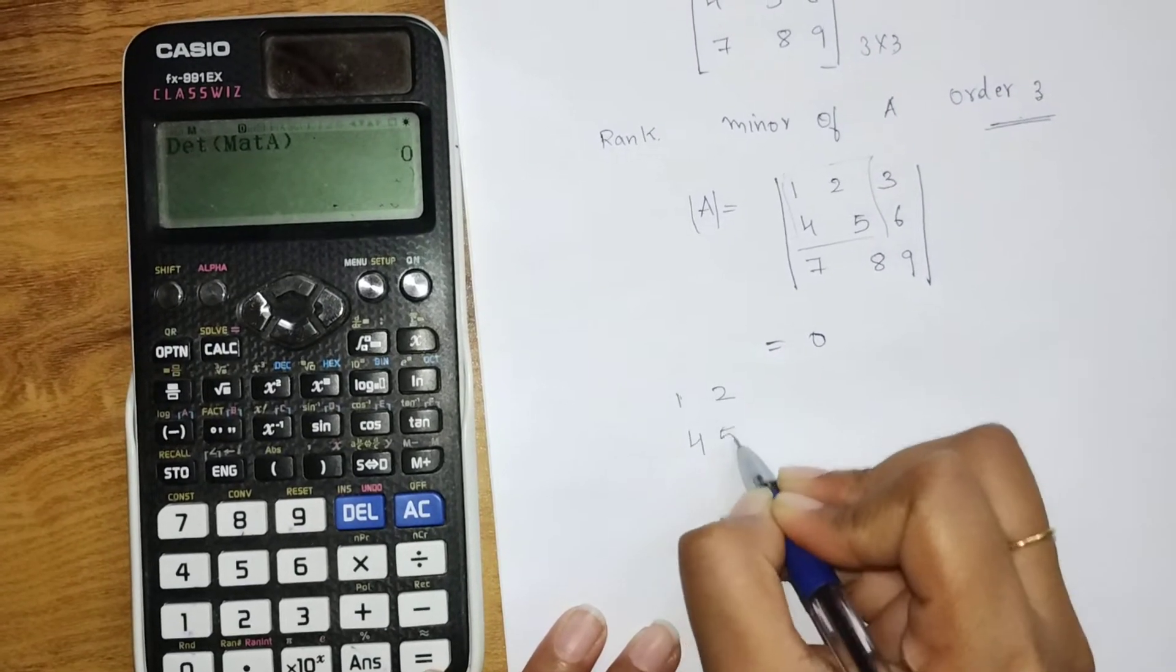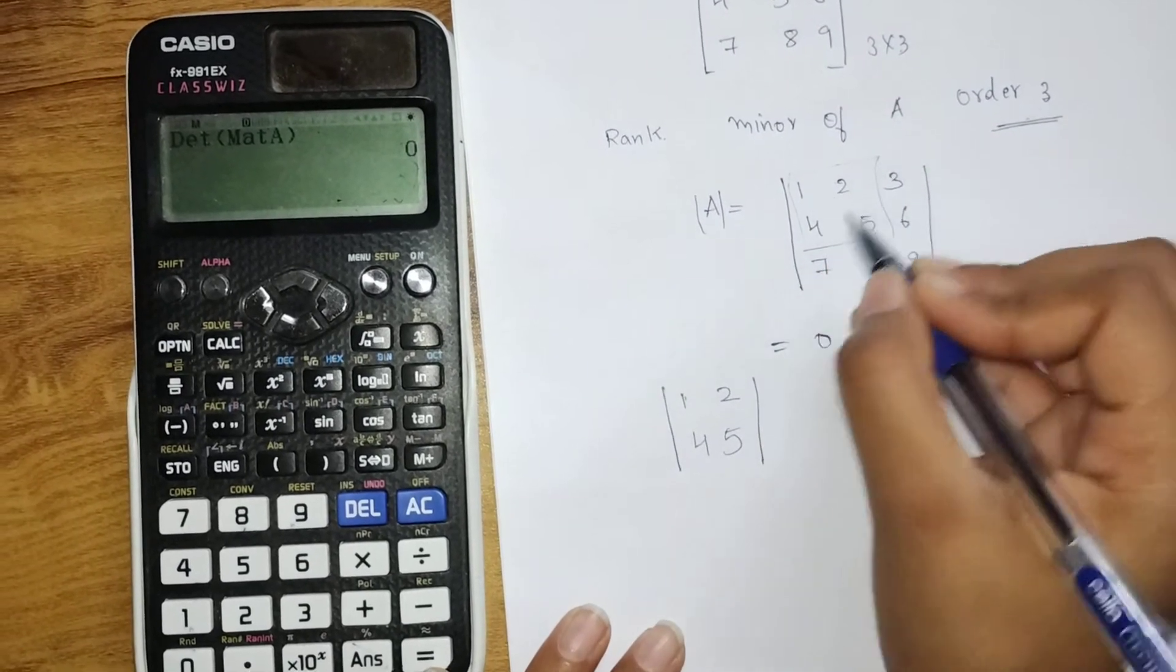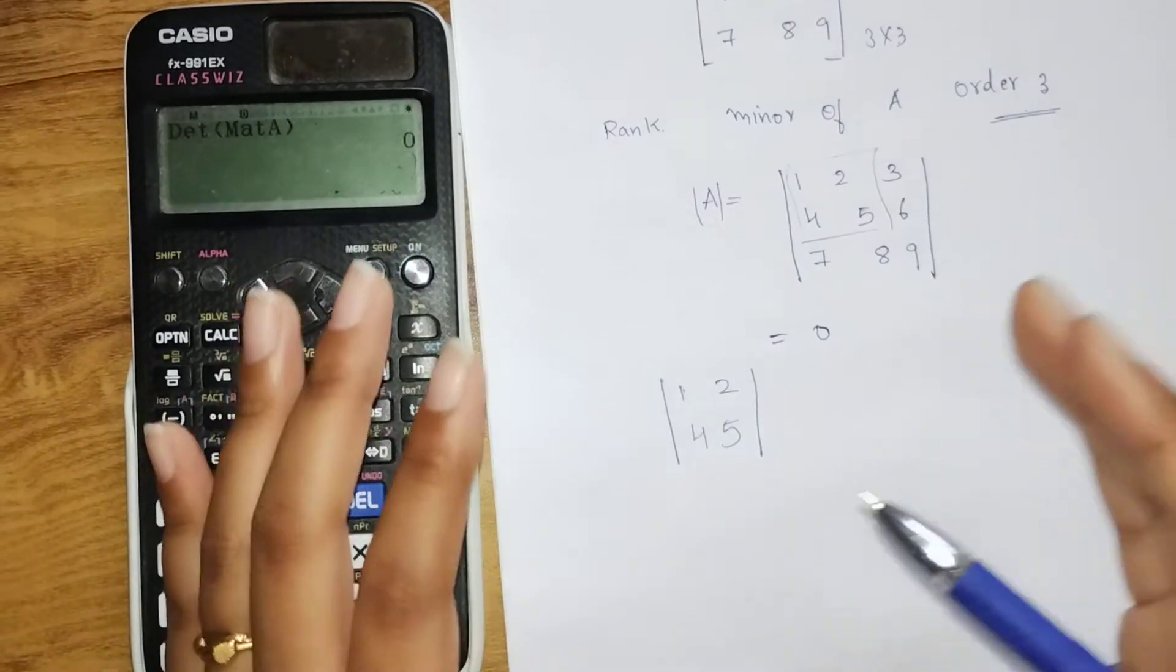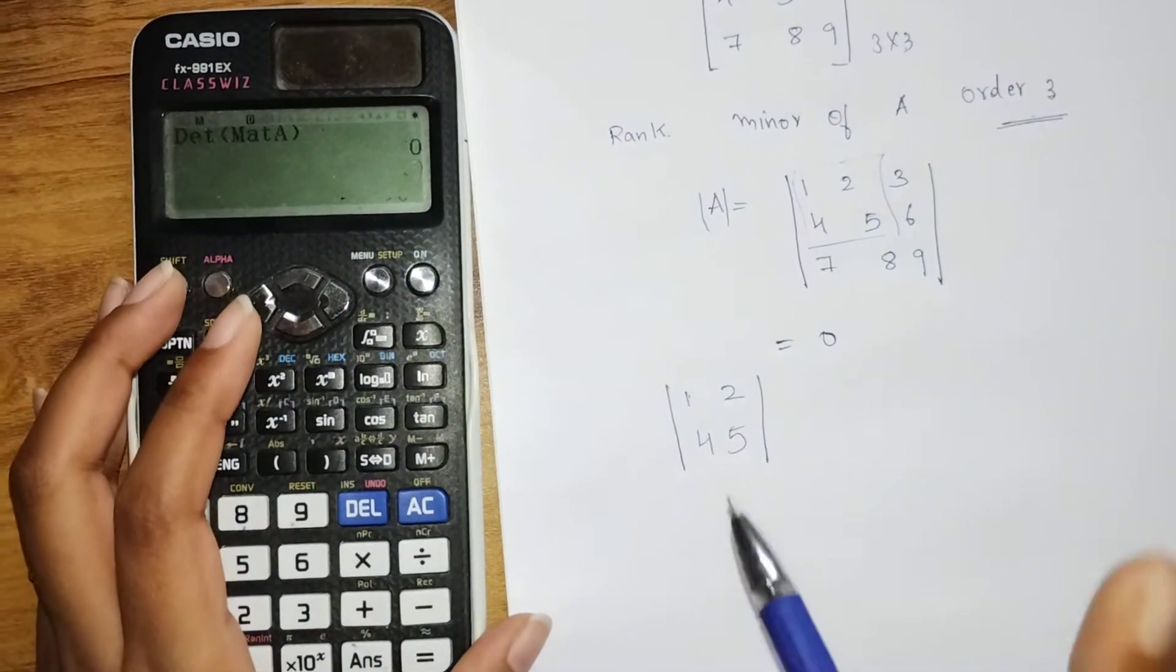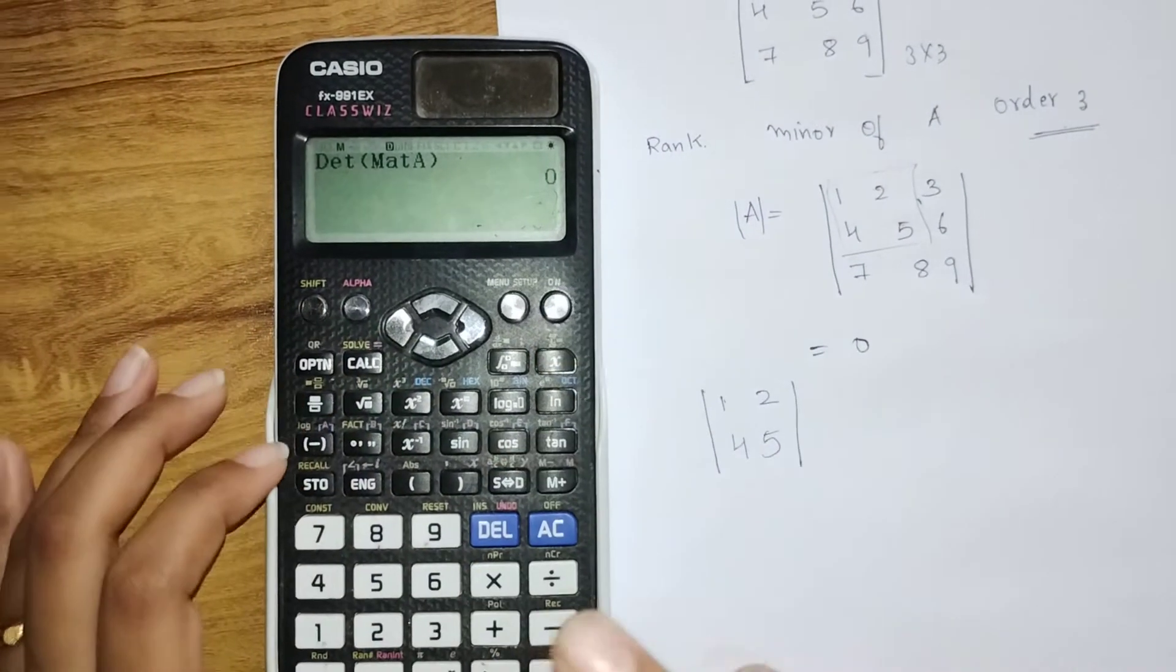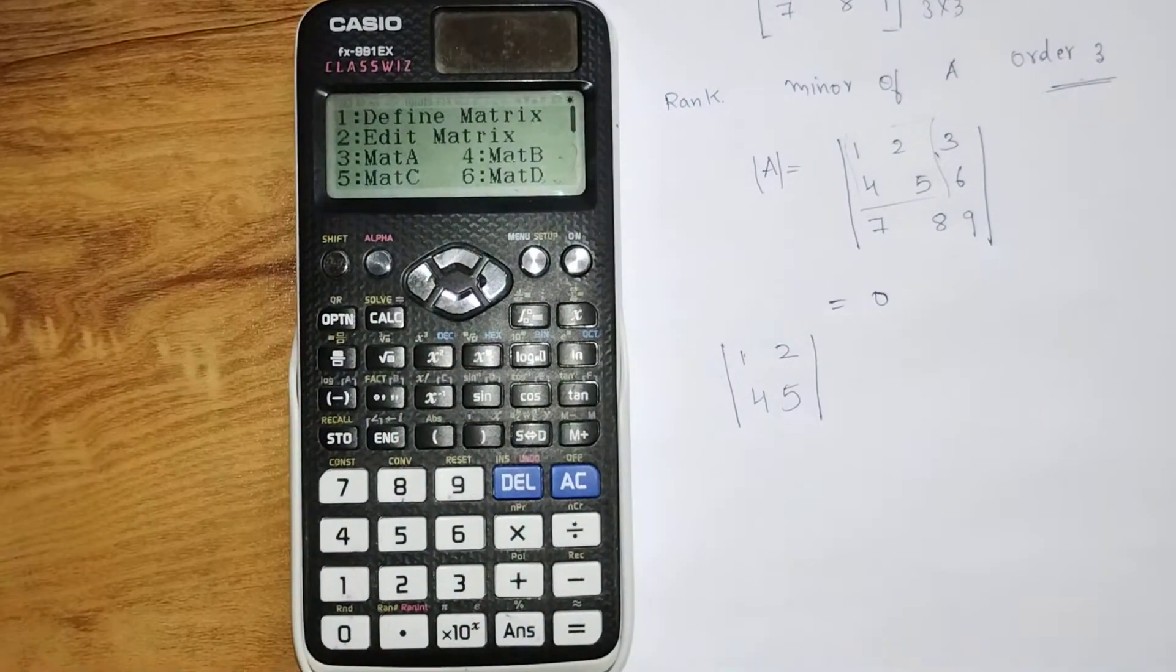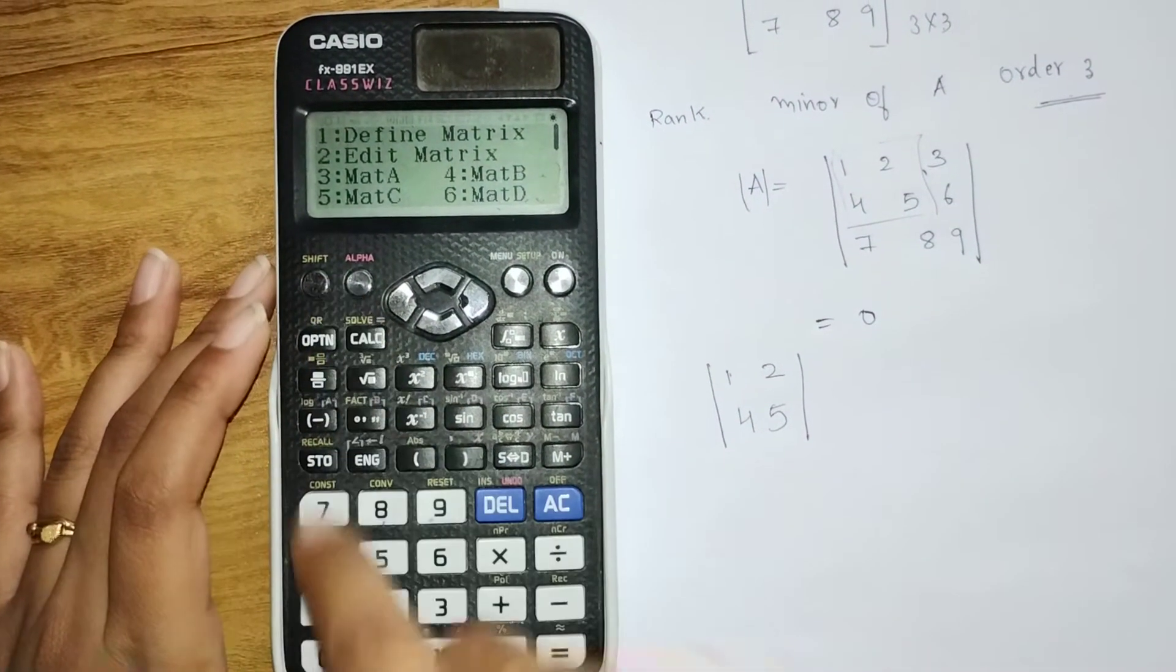1, 2, 4, 5. You can use any other minor also. Whatever determinant we are finding, that should be non-zero. I'm just selecting this part. Again we need to go to Option. I'm defining a matrix. Let that be B.